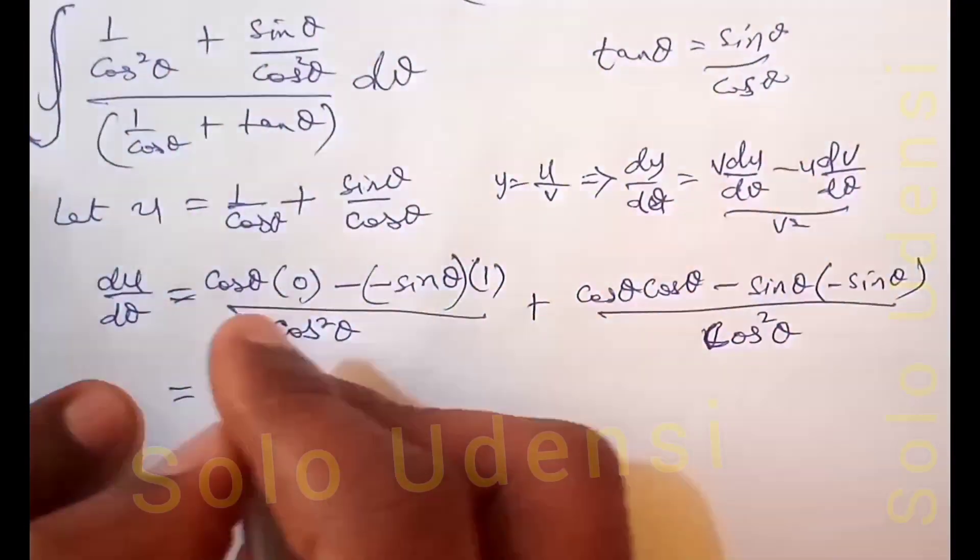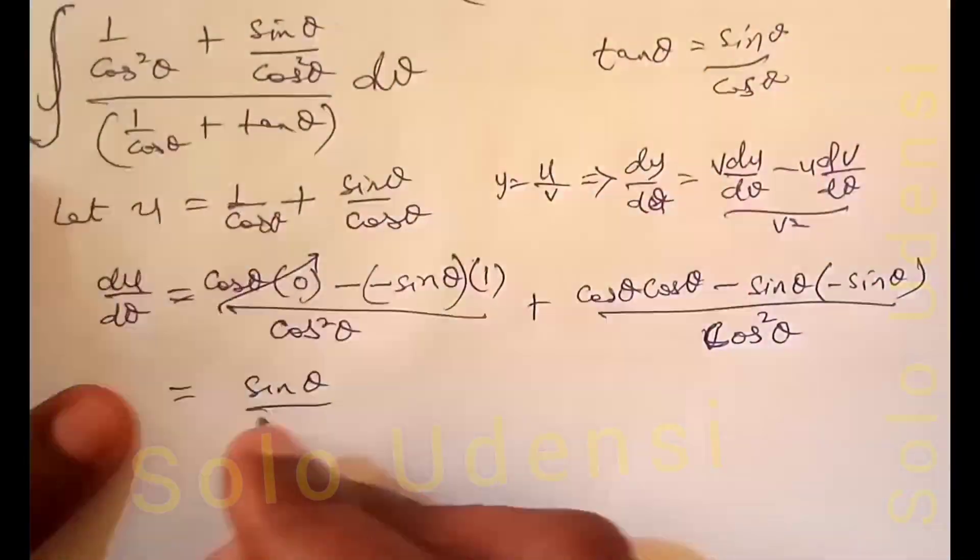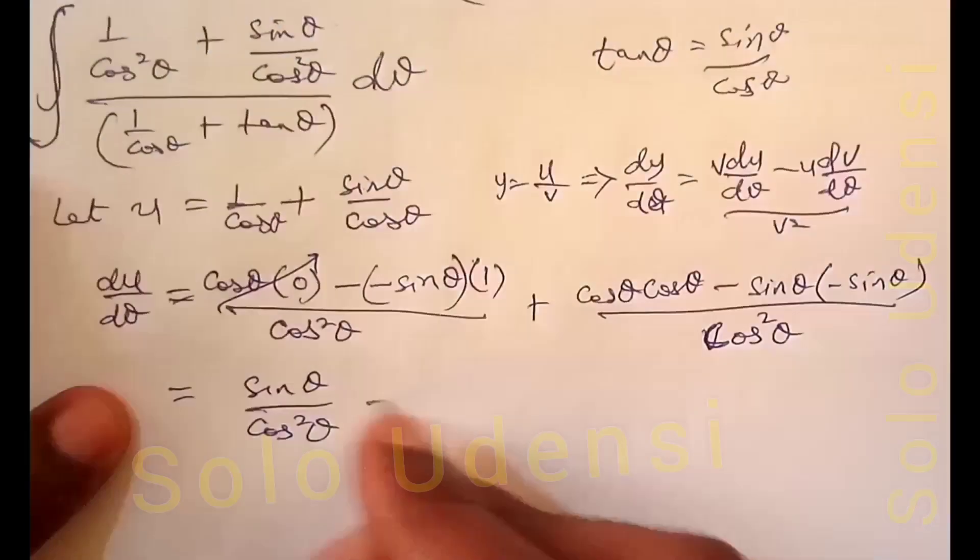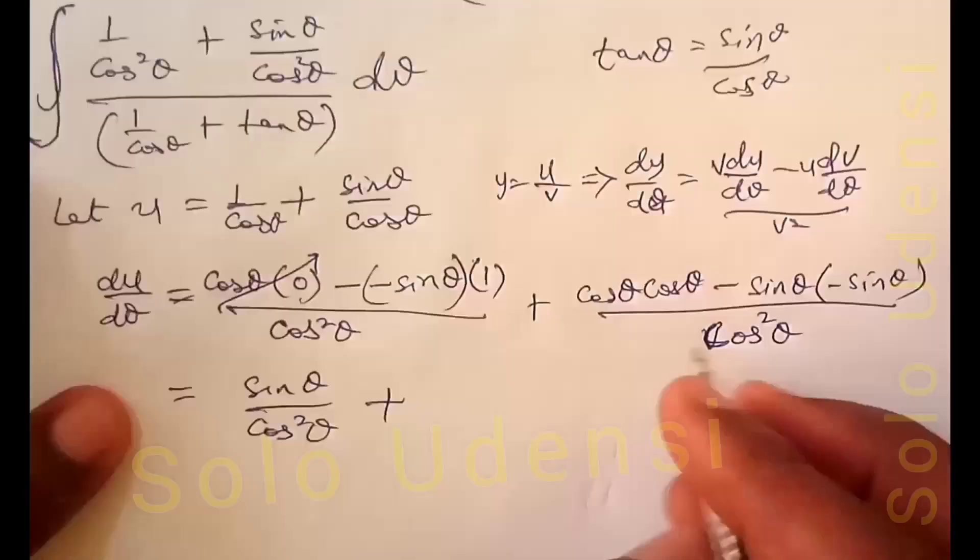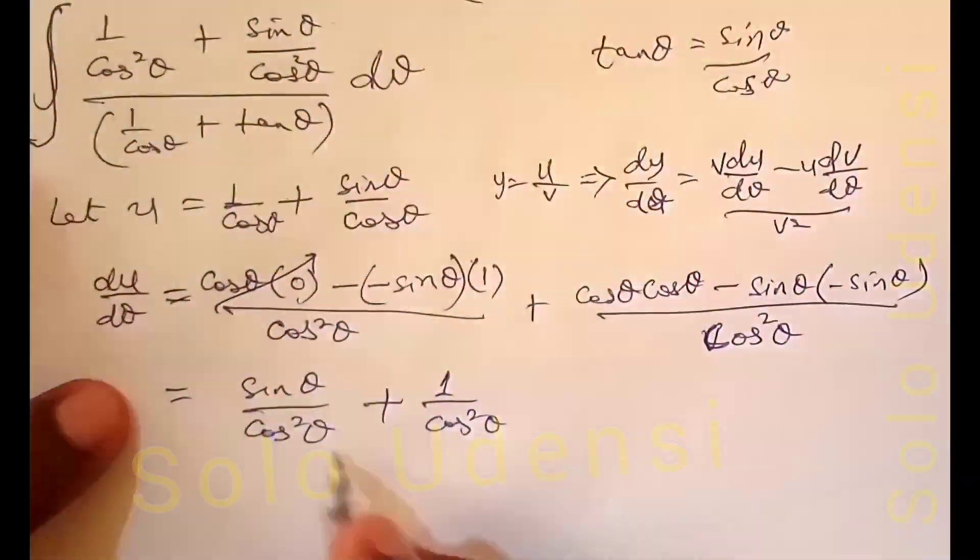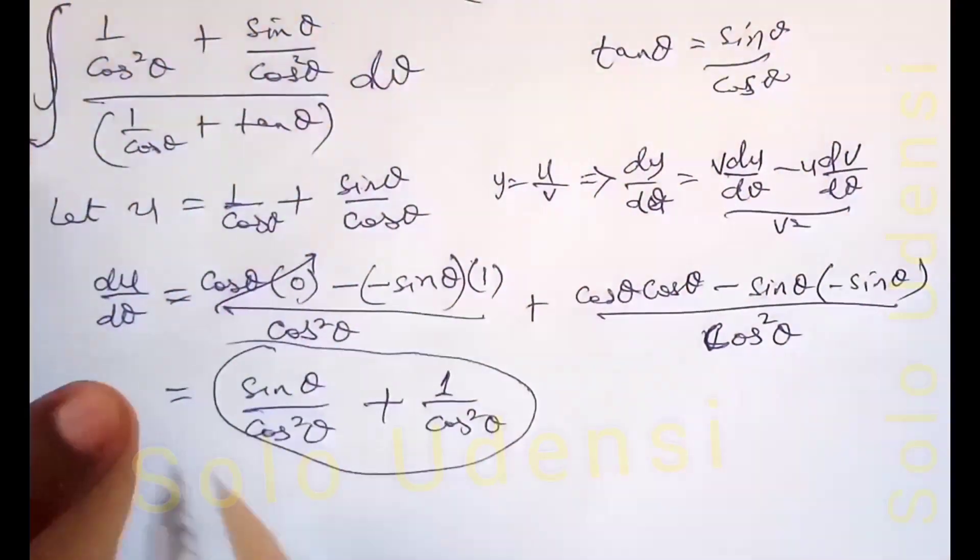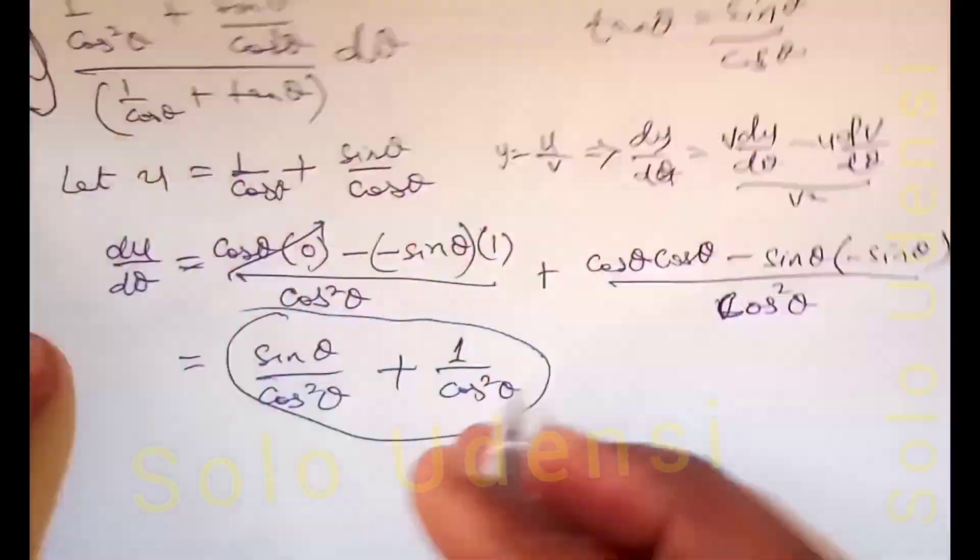This gives sin theta over cos squared theta plus 1 over cos squared theta. Since sin squared theta plus cos squared theta equals 1, we get 1 over cos squared theta. This is what we have in our numerator of the integral.